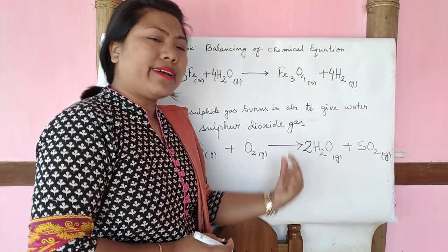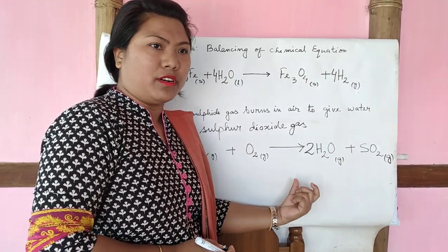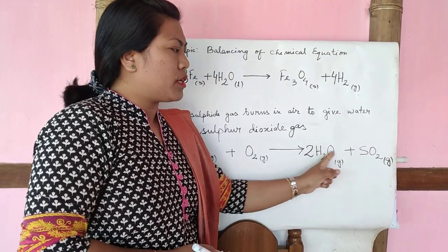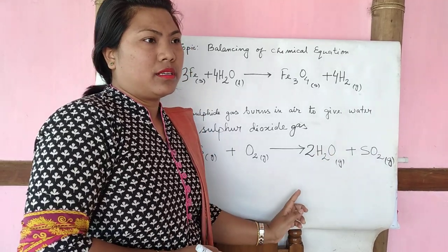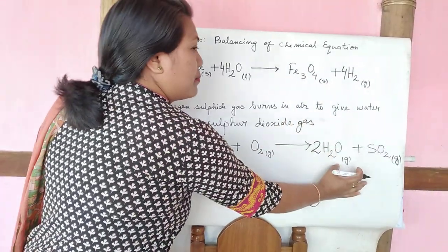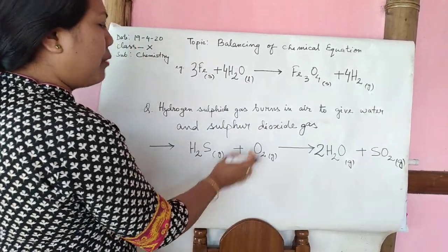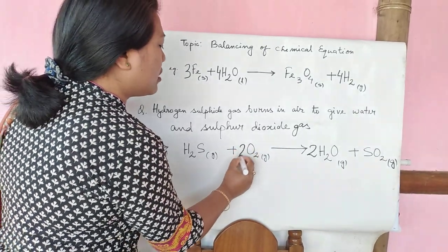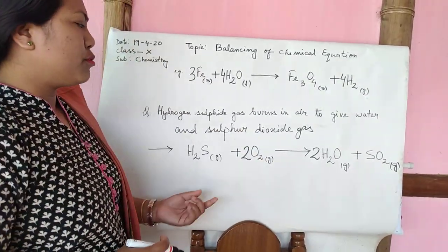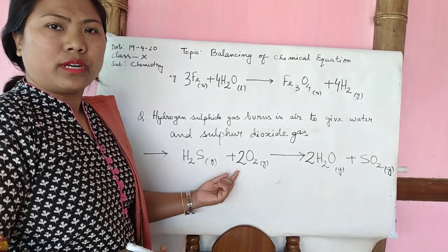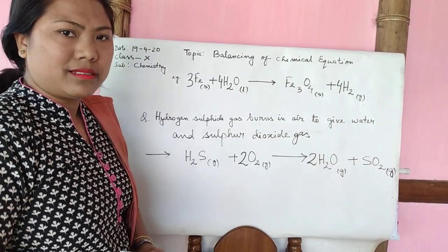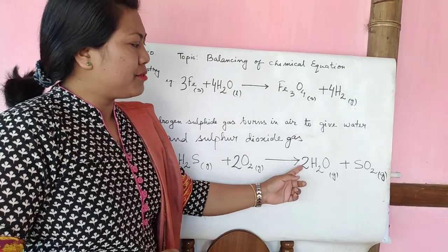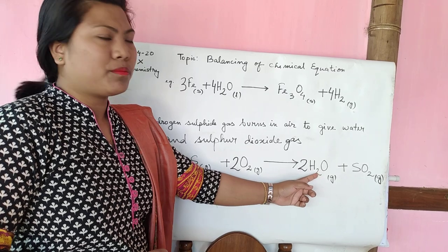I start from oxygen because oxygen has the most atoms. After putting a coefficient of 2, count together — you get four oxygens on the product side. Now on the reactant side you have only two oxygen atoms, so put a 2 there. Two times two gives four atoms total, so oxygen is now balanced.